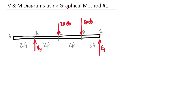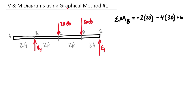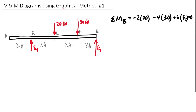We set up equations of equilibrium. Summing moments at point B — so B_Y drops out — we have a distance of 2 feet to the 20-pound force (negative by right-hand rule), 4 feet to the 30-pound force (also negative), and 6 feet to E sub Y (positive), all equal to zero. So 40 plus 120 equals 160, divided by 6 gives E sub Y equals 26.67 pounds.